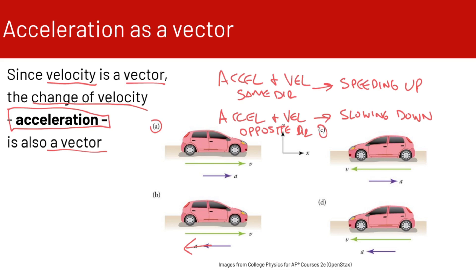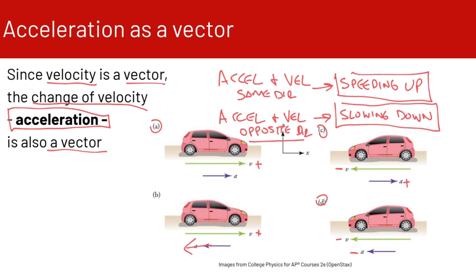In C, the car is moving to the left — it has a negative velocity — but a positive acceleration. It is still slowing down because the acceleration and velocity are in opposite directions. In D, we have a negative velocity and a negative acceleration, so it is speeding up in the negative direction because the acceleration vector and velocity vector are pointing in the same direction.